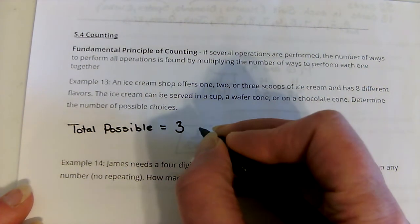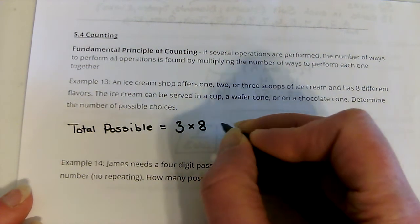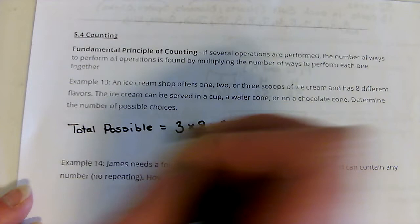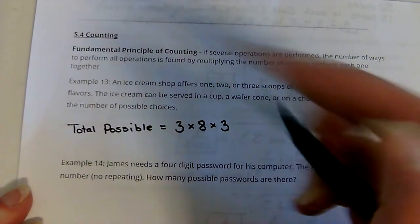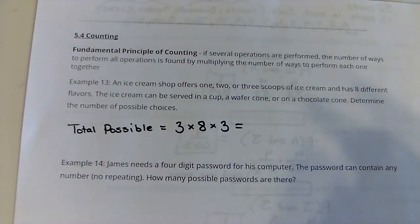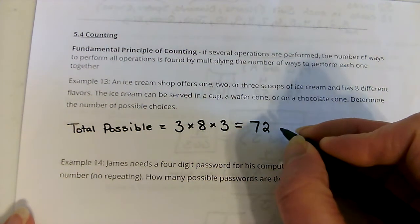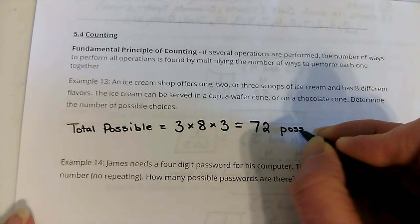Times eight different flavors and three different ways it can be served. We're just going to multiply that all together. Three times eight times three, and that's 72 possibilities, possible choices.